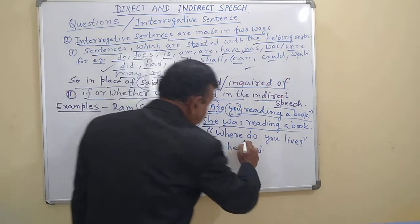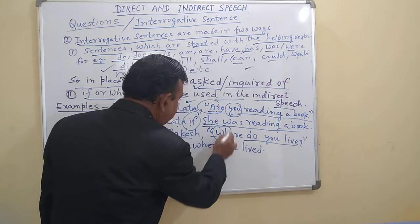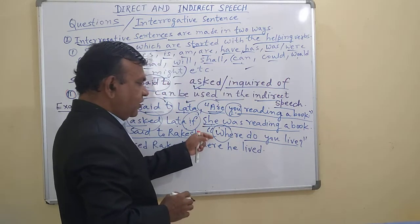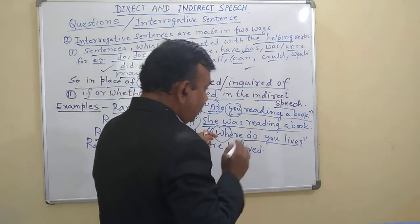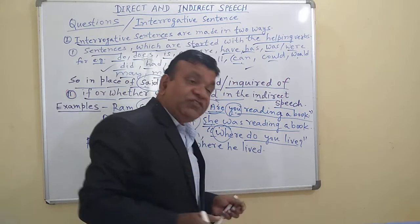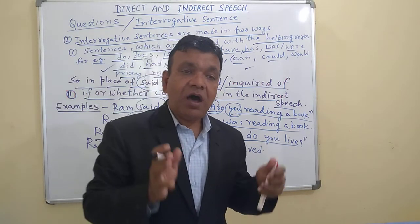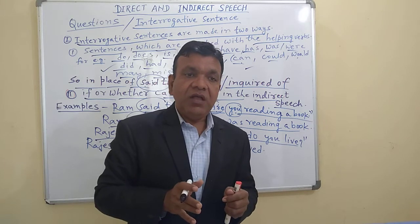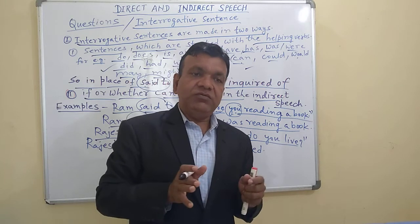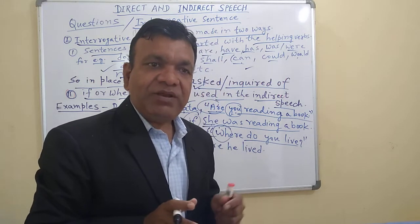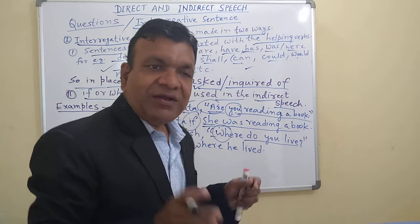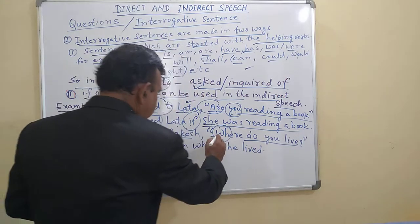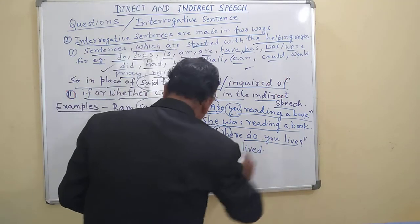Now, children, this is the WH family of questions. Rajesh said to Rathis, 'Where do you live?' If a question is asked by a WH word — which, where, when, how, what, whom — these are the WH family, and questions are asked through these WH words as well.